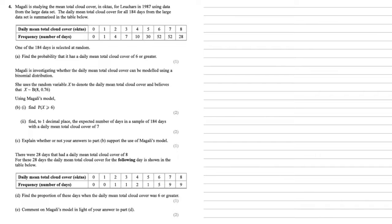There were 28 days that had a daily mean total cloud cover of 8. For these 28 days the daily mean total cloud cover for the following day is shown in the table below. Part D, we need to find the proportion of these days when the daily mean total cloud cover was 6 or greater. So looking at our table, there were 5 days with a cloud cover of 6, 9 days with a cloud cover of 7, and another 9 with a cloud cover of 8. Add them all together. This is out of the 28 days in total. So we've got 23 over 28, or 0.821 as a decimal.